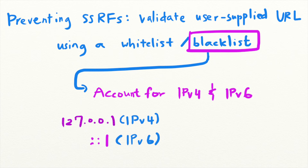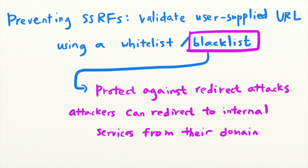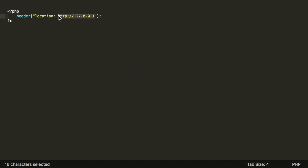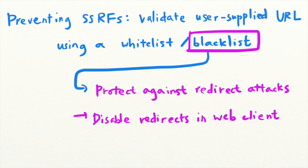A way that attackers can bypass blacklists, even when they're well designed, is by using redirects. Attackers can use URLs that they control but that redirect to the blacklisted address. For example, they can host a page that redirects to the local address like this. When your server requests the attacker's page, it is actually redirected to a restricted internal address. You can prevent these types of attacks by disabling support for following redirects in your web client.